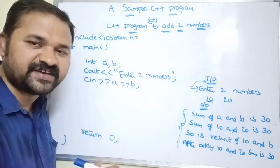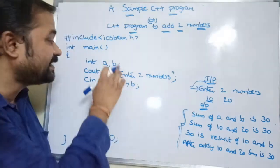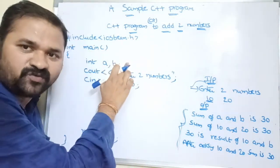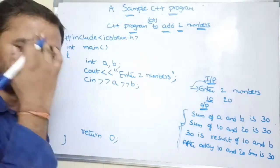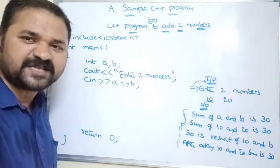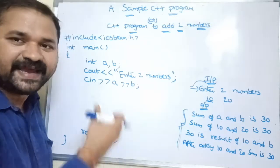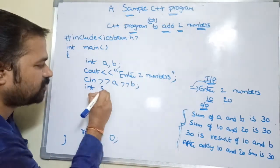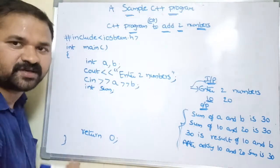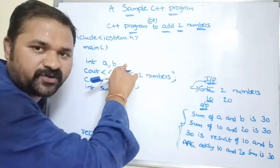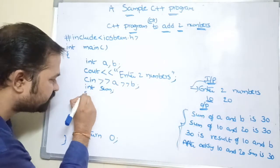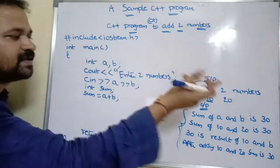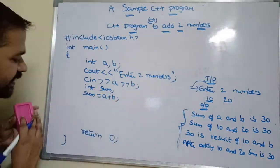Next we calculate the sum, but first note an important difference: in C language, variables must be declared in the declaration part only. In C++, we can declare a variable at any position or location as we want. So here we can declare `int sum` right here — no problem in C++, whereas in C it is not possible. The formula for sum is `sum = a + b`, so the value of sum is 10 plus 20, which equals 30.